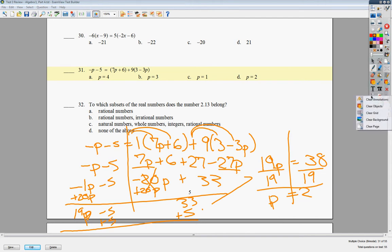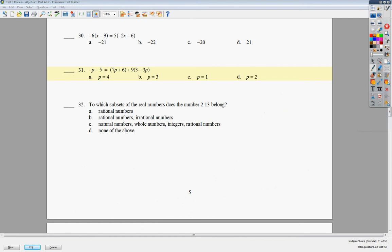The next question says, to which subset of the real numbers does the number 2.13 belong? Now, it terminates at 3. So 2.13 is not going on forever. You don't see it as a square root of something that doesn't work properly, and you don't see a bunch of numbers here, not dot, dot, dot. So we're going to say that it terminates. So it's not irrational.